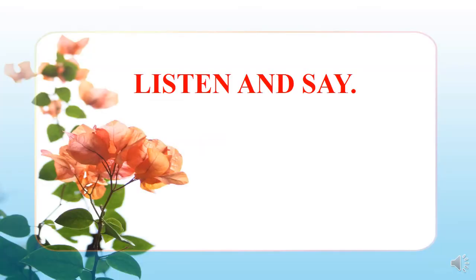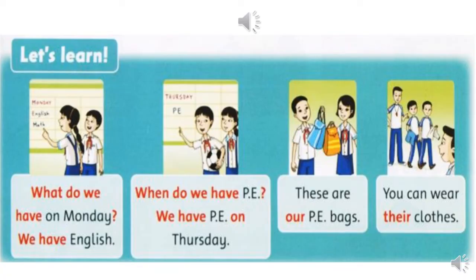Listen and say, Part 2 in your c-book. Nghe và nói. Now you will listen to the recorder twice. Listening 41 — Listen and say. What do we have on Monday? We have English. When do we have PE? We have PE on Thursday. These are our PE bags. You can wear their clothes.